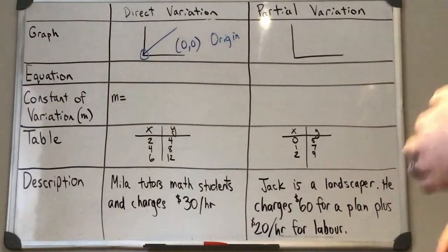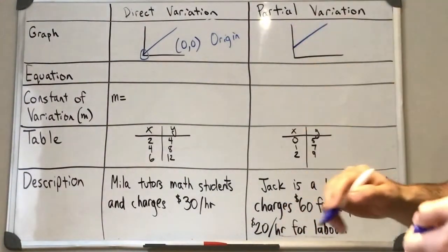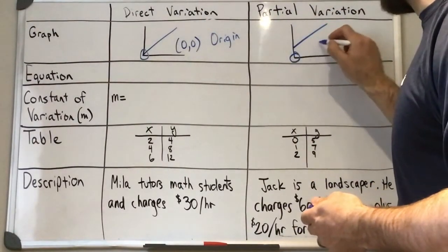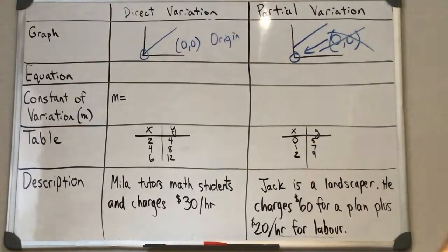For partial variation, the graph will pass through the y-axis anywhere above or below that point (0,0), but it won't pass through that point.